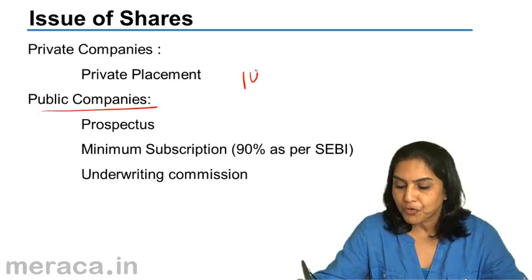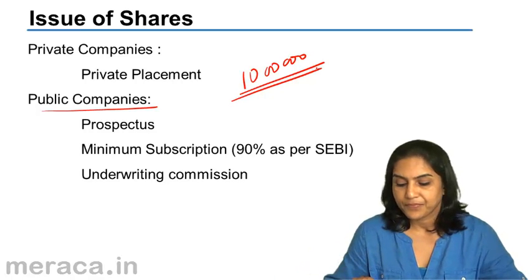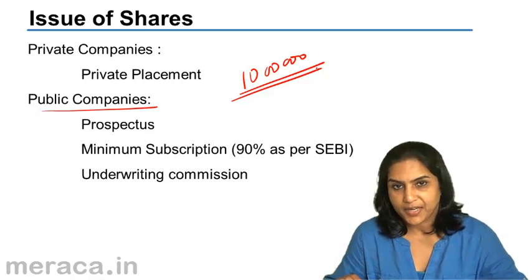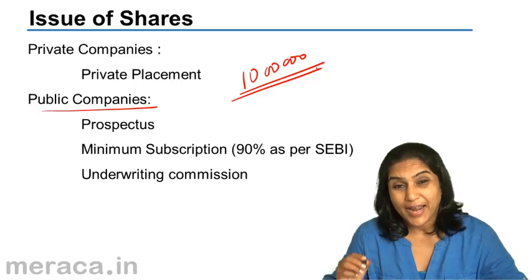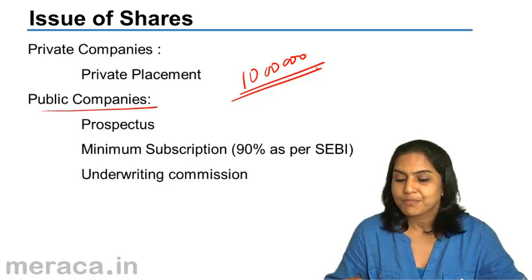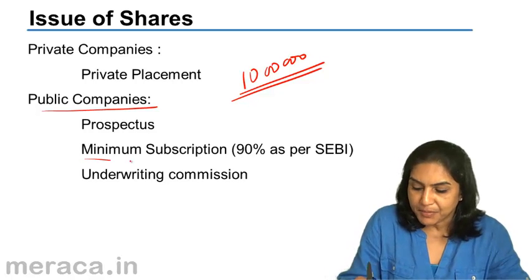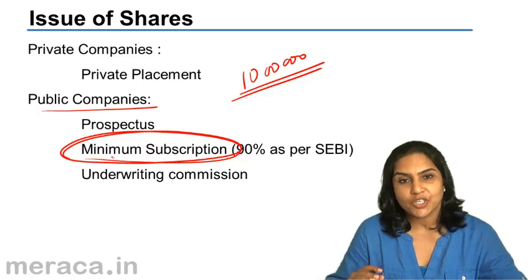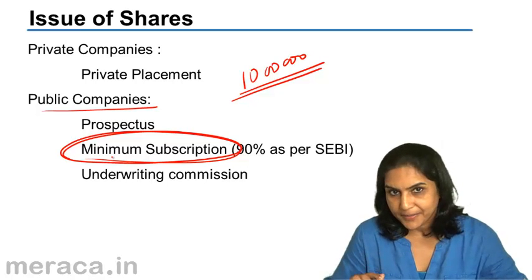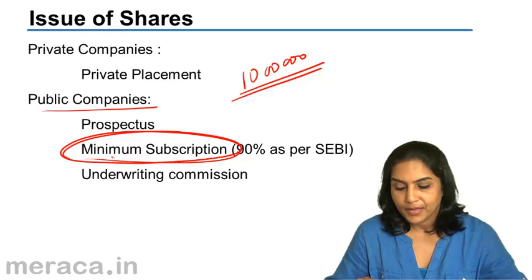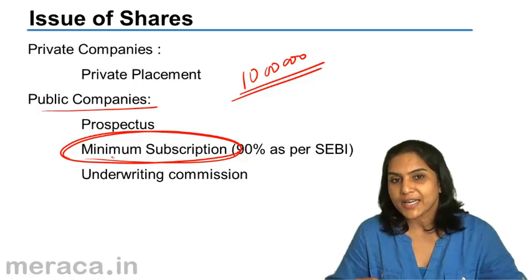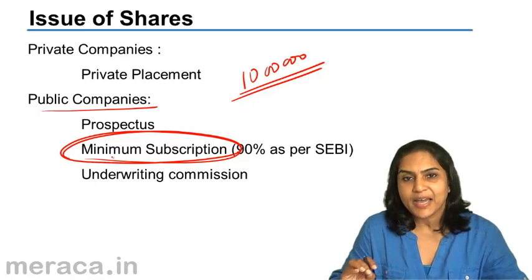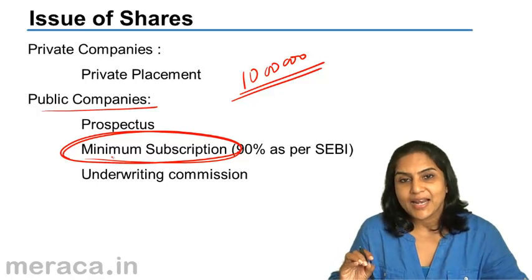If a company makes an issue for 10 lakh shares, according to SEBI — the Securities Exchange Board of India — at least 90% of the shares issued must be subscribed for. That is the minimum subscription, and if this minimum subscription is not subscribed for, the issue falls through and the money which has been collected has to be refunded. Minimum subscription is supposed to be the amount which is enough to pay for the fixed assets, for the working capital, for other commitments which have been made, but SEBI has specified that minimum subscription should not be less than 90%.